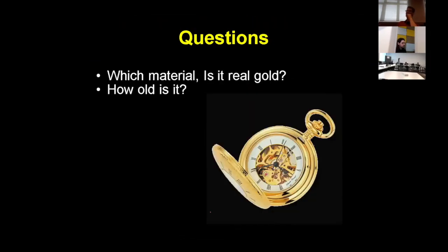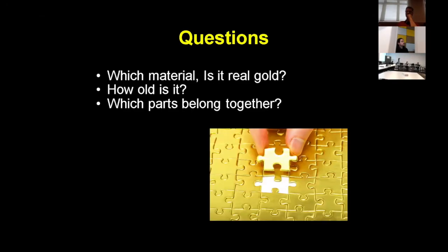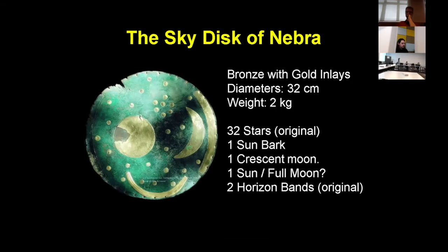The next question normally coming is how old is it. Here we must say we actually don't know. We can just determine element concentration but cannot say anything about ages. Third question: which parts belong together? This can have different implications. If different parts of a treasure were found at different times, you're not sure if they're from the same treasure, like the Hiddensee treasure, a famous Viking treasure. Or if you have an object mounted from different parts, you can say if they were all mounted at the same time or have a history.